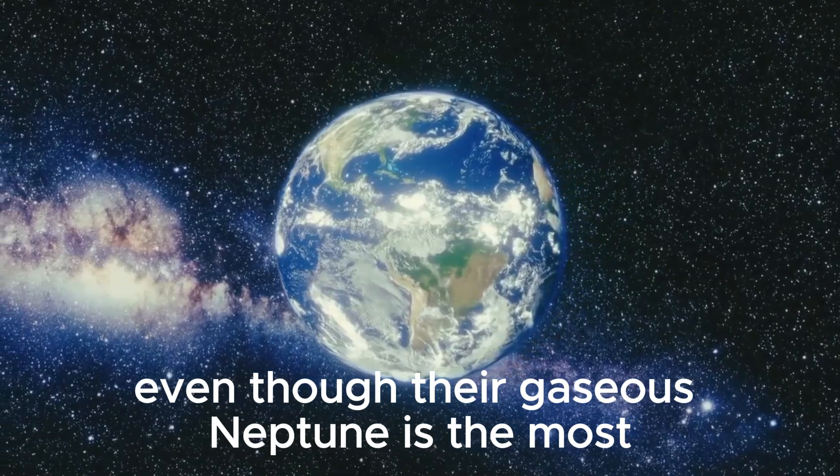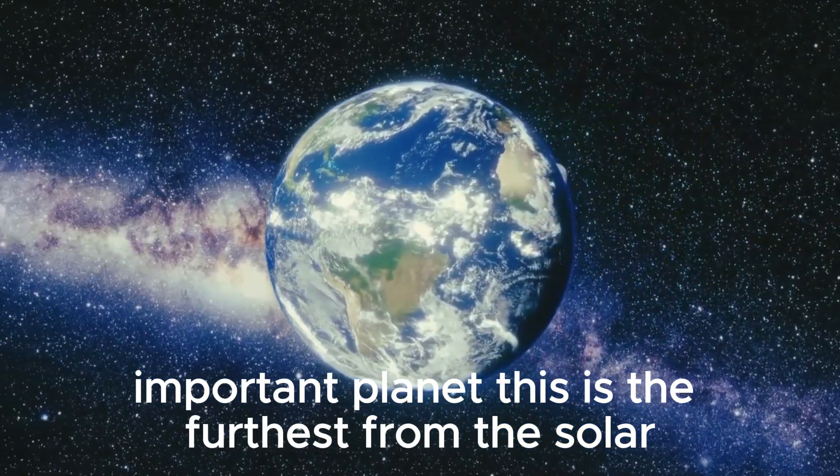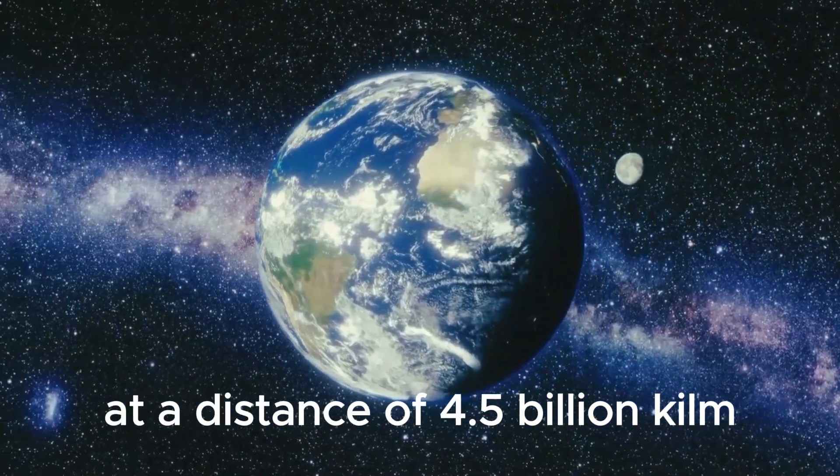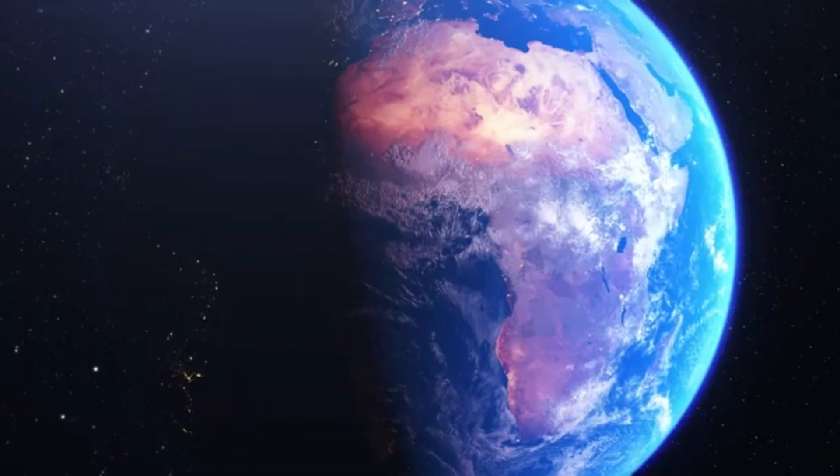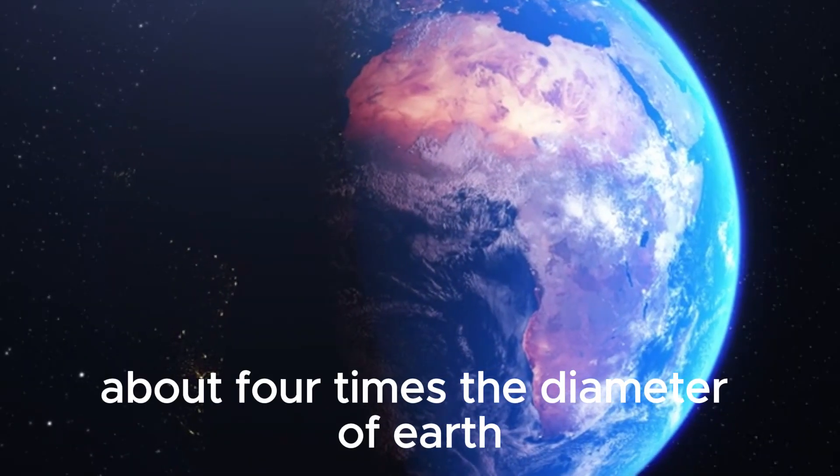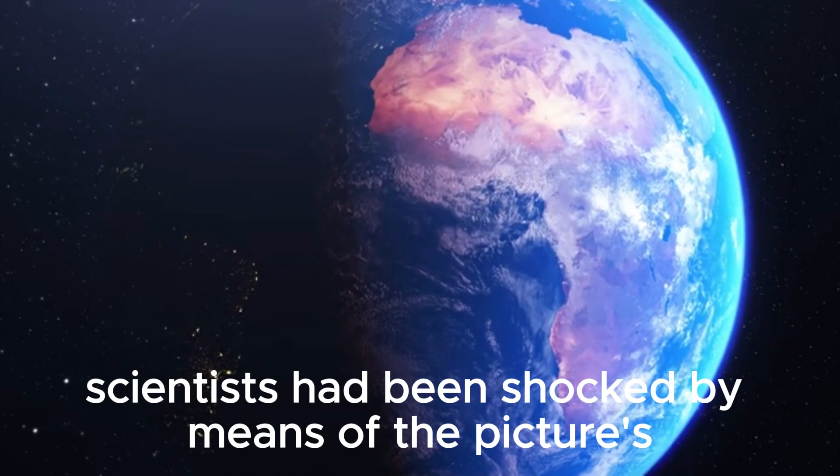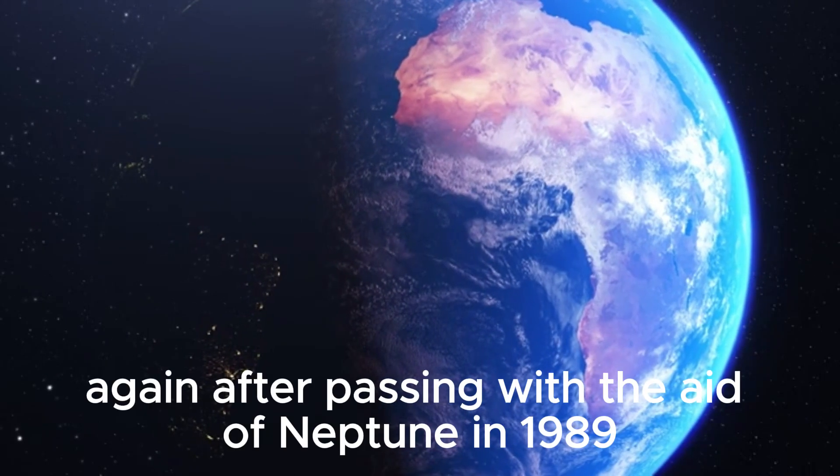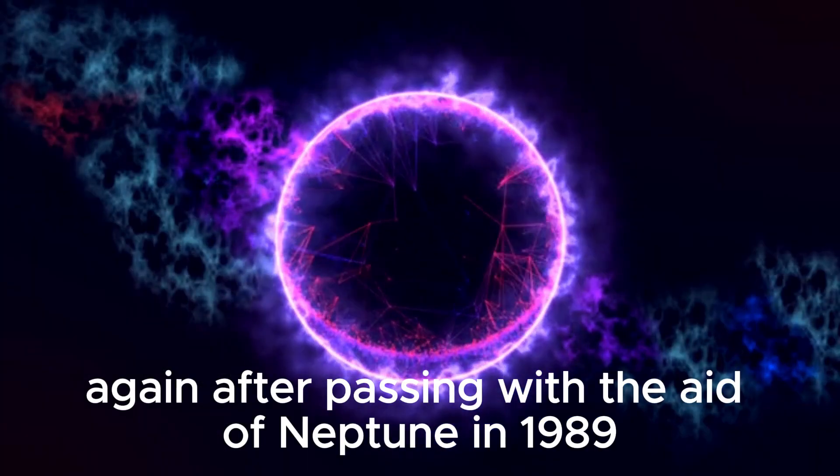Even though their gaseous, Neptune is the most important planet, this is the furthest from the solar, at a distance of 4.5 billion kilometers, about four times the diameter of Earth. Scientists had been shocked by means of the pictures Voyager 2 again after passing with the aid of Neptune in 1989.